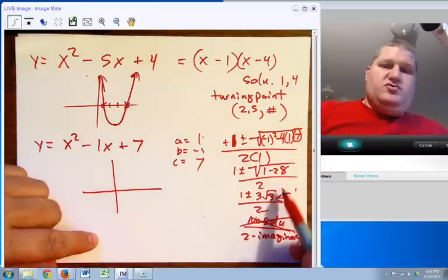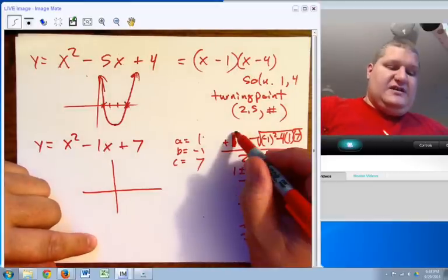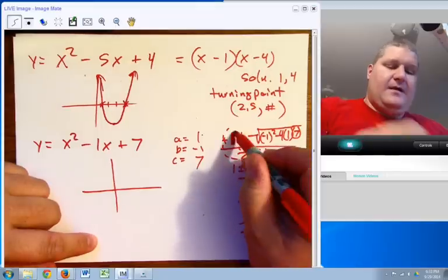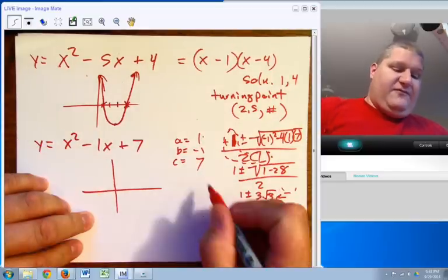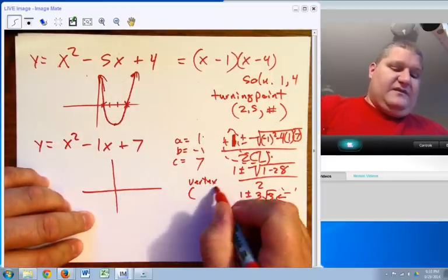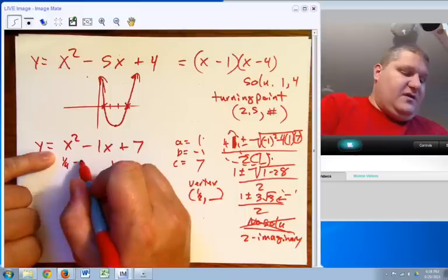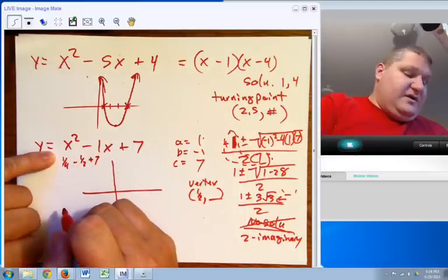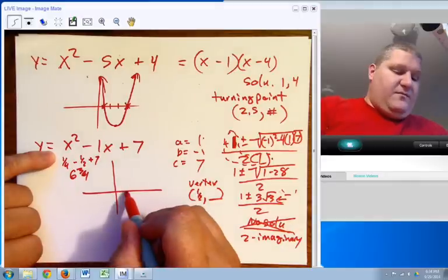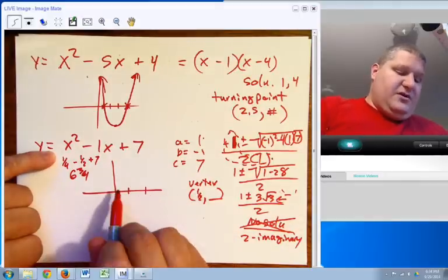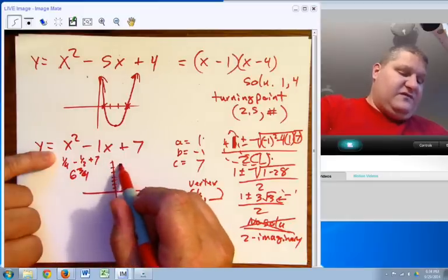But the idea is the graph here is going to look as follows. There are no solutions, no zeros, no roots, no x-intercepts. What we can say is, of course, that the vertex happens to be at opposite of b over 2a, something you learned in Algebra 2, also we've talked about, is 1 half. So my vertex is at 1 half comma something. Now, if I were to take care of this problem, I'd say 1 fourth minus 1 half plus 7. So in this case, I come up with 6 and 3 quarters. So I go over 1, 2, but I'm only going over a half. I'm going up 1, 2, 3, 4, 5, 6, 7. So my vertex is right here.